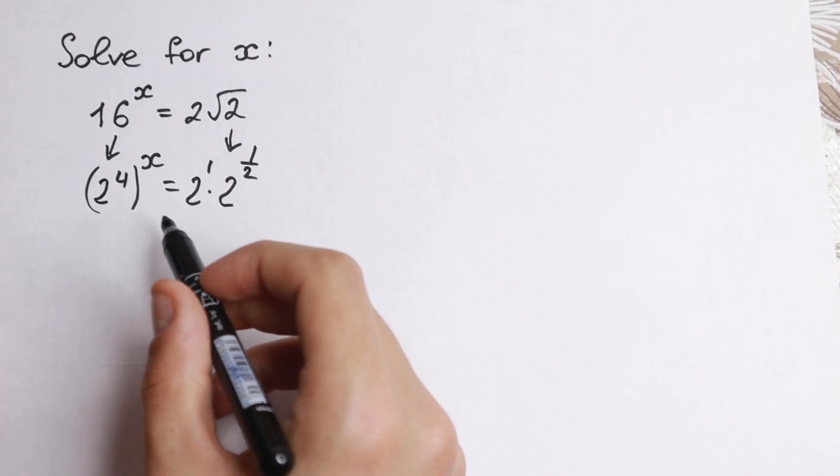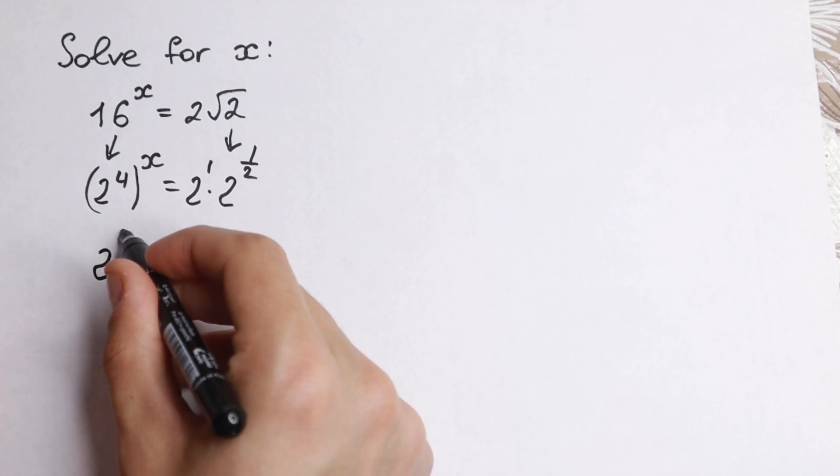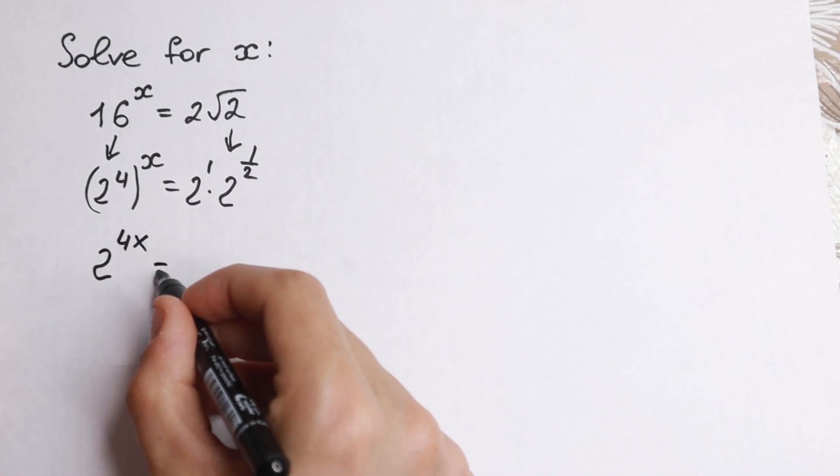We know that property right here, if we raise the powers like that, we need to multiply it, so we'll have 2 to the power 4x equal to.